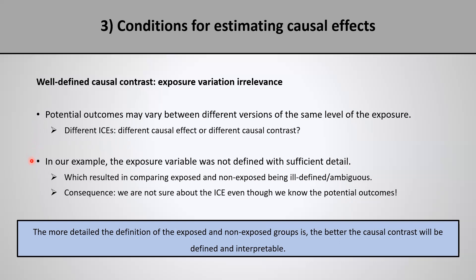This happened because the exposure variable was not defined with sufficient detail — I simply separated individuals into whether or not they were overweight or obese. This is a very broad categorization, and the vague definition resulted in an ill-defined or ambiguous comparison between groups. The implication is that the more detail I use when defining the exposed and non-exposed groups, the better defined the causal contrast will be, and therefore the more interpretable it will be.